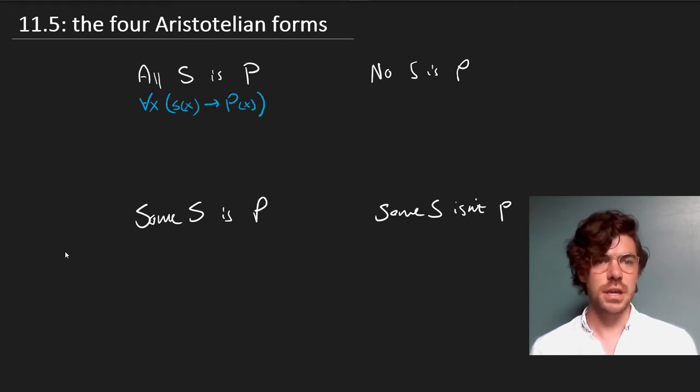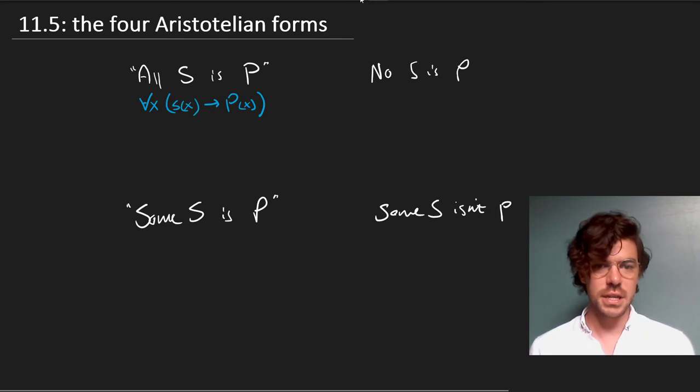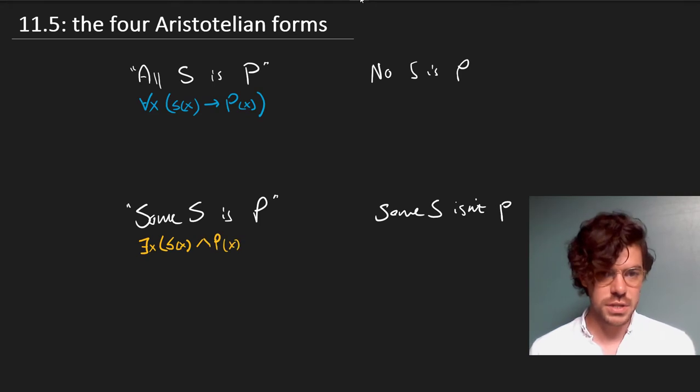The first we'd represent as: for every x, if x is an S then x is a P. We take this to be equivalent with the English sentence 'all S is P'. The sentence 'some S is P' we represent as: there exists an x which is S and which is P.